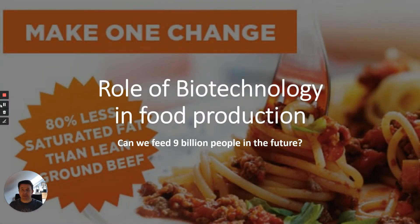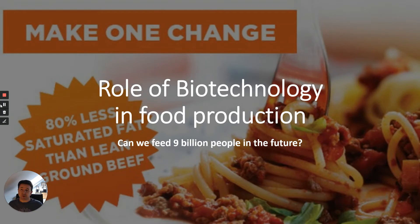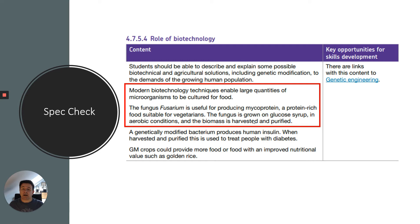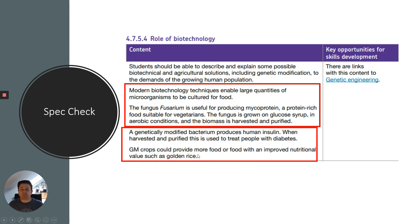Welcome to biology. This video is about the role of biotechnology in food production, related to food security. Following on from a previous video on intensive farming, this is more about how biotechnology could help us with food security and increasing the amount of food we produce. The spec says you should be able to describe and explain some possible biotechnical and agricultural solutions. Today we're going to talk about mycoprotein, better known as Quorn, which is an alternative to meat, and we're going to look at GM crops and how they can provide more food or food with improved nutritional value.